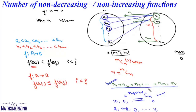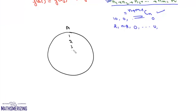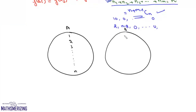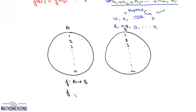Another method uses a bijection argument. Consider sets A = {1, 2, 3, ..., N} and B = {1, 2, 3, ..., M}. There is a one-to-one correspondence between non-decreasing functions in this case and non-decreasing functions in any general case. We want functions from A to B where F(x) ≤ F(y) whenever x < y.